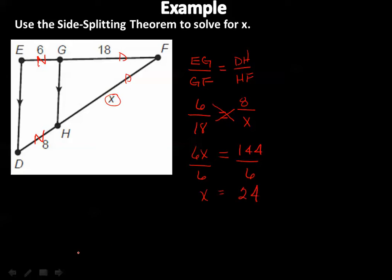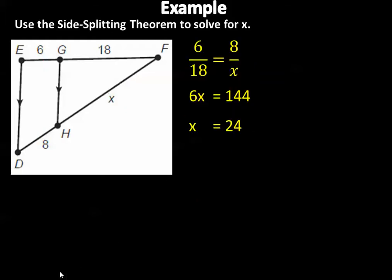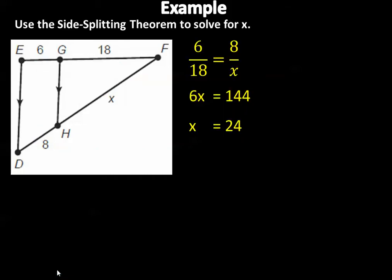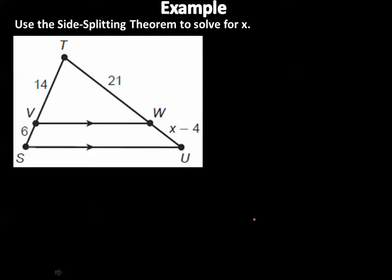We solved for x equals 24. Checking the answer key — they set it up the same way: 6 over 18 equals 8 over x, giving x equals 24. I was hoping I'd set it up differently, but we matched.